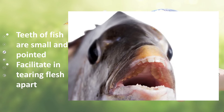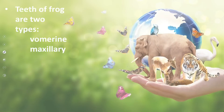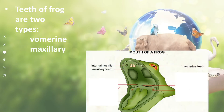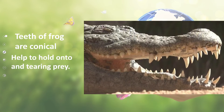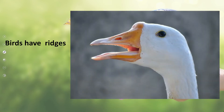Fish ke jo daant hote hain, yeh small aur pointed hoti hain — they help the fish to tear the flesh apart. Next, the frog has two types of teeth: vomerine and maxillary — dono upper jaw mein present hoti hain — and they help the frog in holding or gripping the prey, and the frog swallows its prey as a whole. The teeth of the alligator are conical, and they help to grip, tear, and hold the prey. Birds have ridges — they do not have teeth.